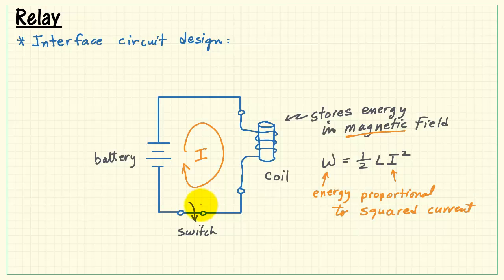Now imagine that we open the switch again. Now the open switch tells us that we ought to have zero current in the circuit.